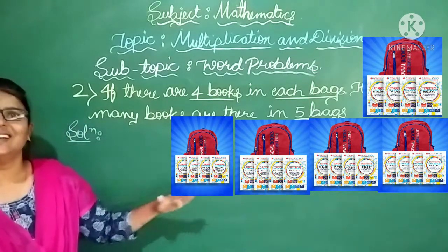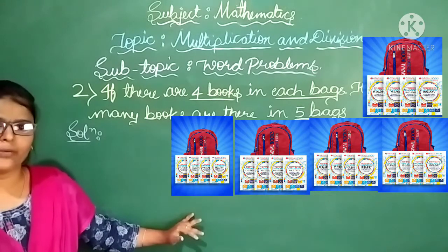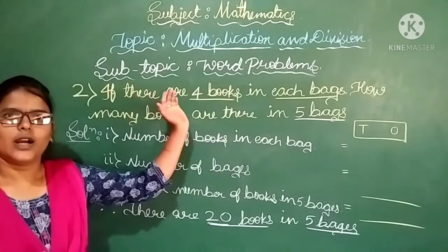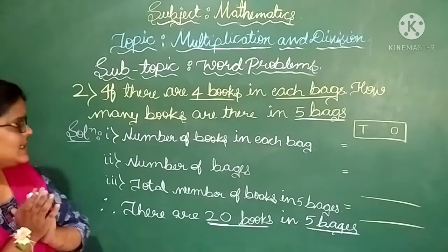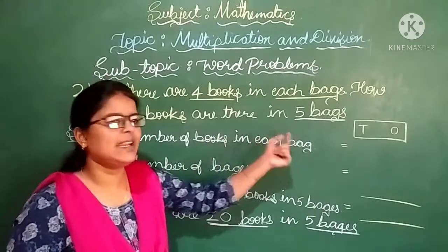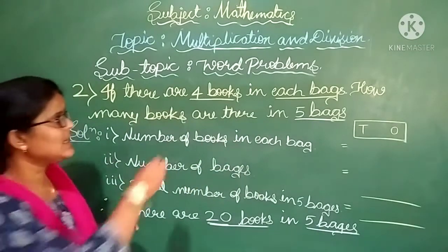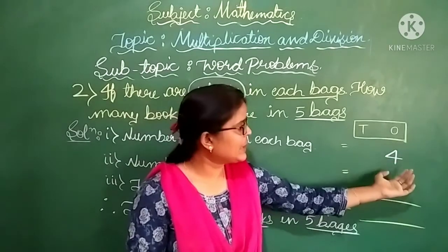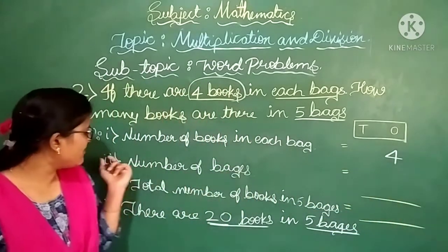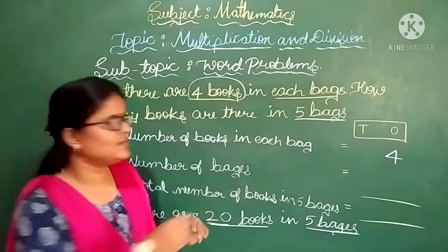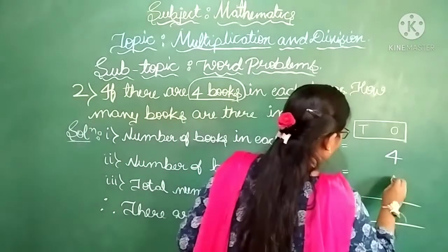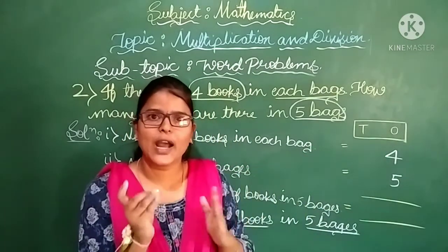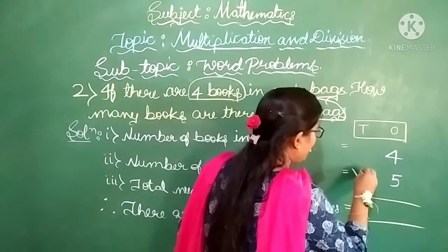How to solve this using sentences? Dear children, before answering the question, you must first understand what is in the question. First point: number of books in each bag — 4 books. Write down this 4 under the 1s column, because 4 is a single digit number. Second point: number of bags — there are 5 bags. Write down this 5 under the 1s column, and do not forget to write the sign of multiplication.